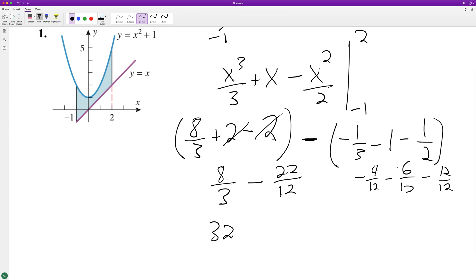So we have thirty-two plus twenty-two over twelve. Divide by six, we end up with nine over two or four point five, and that's this area in here.